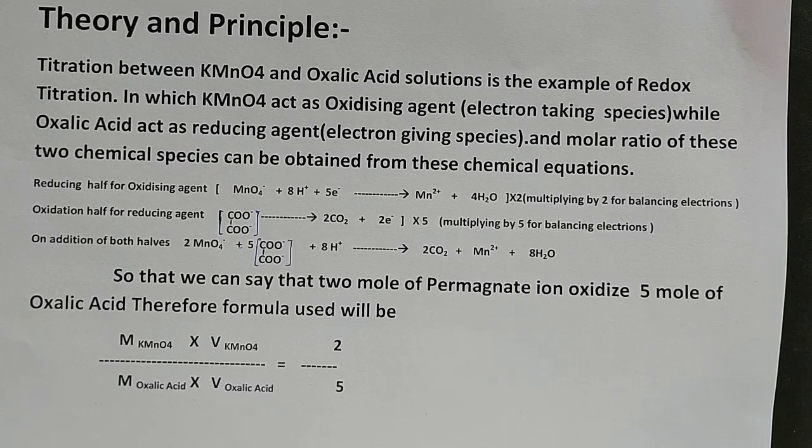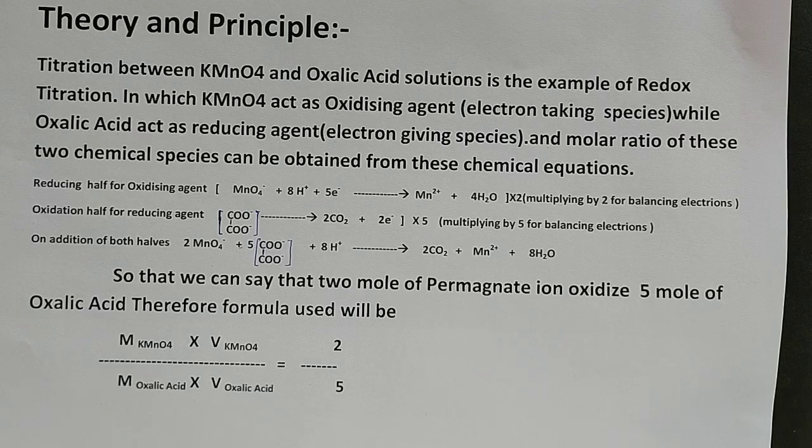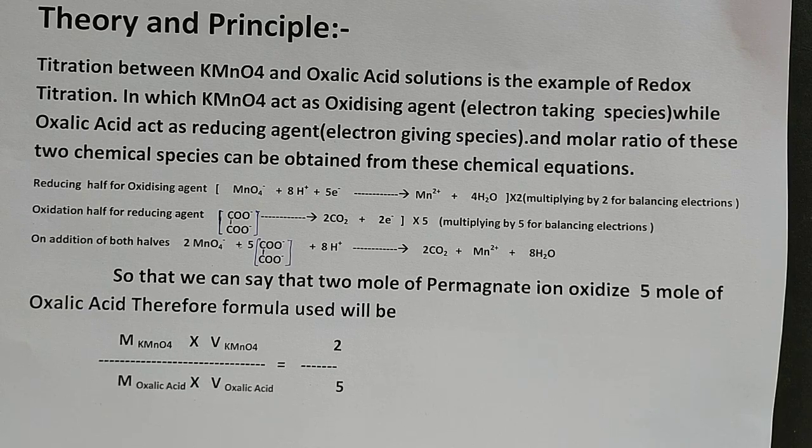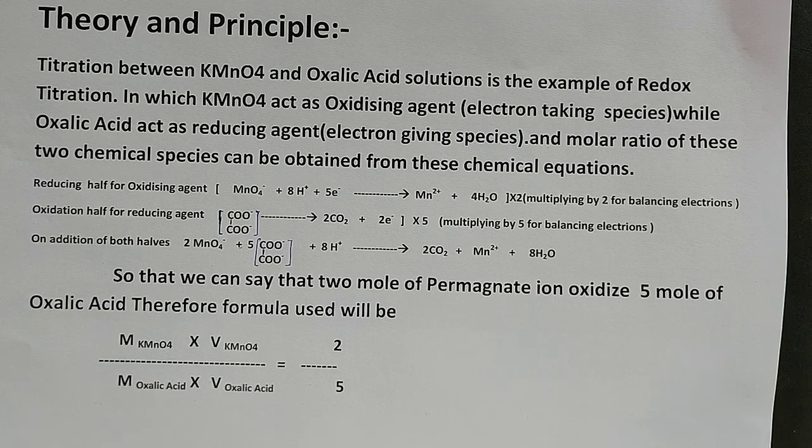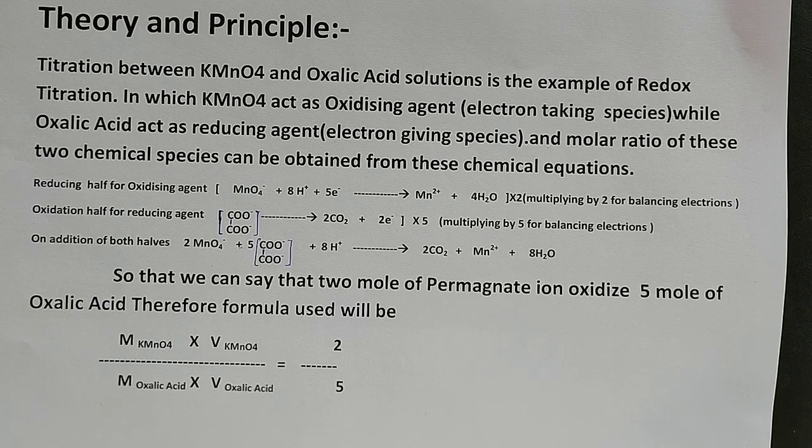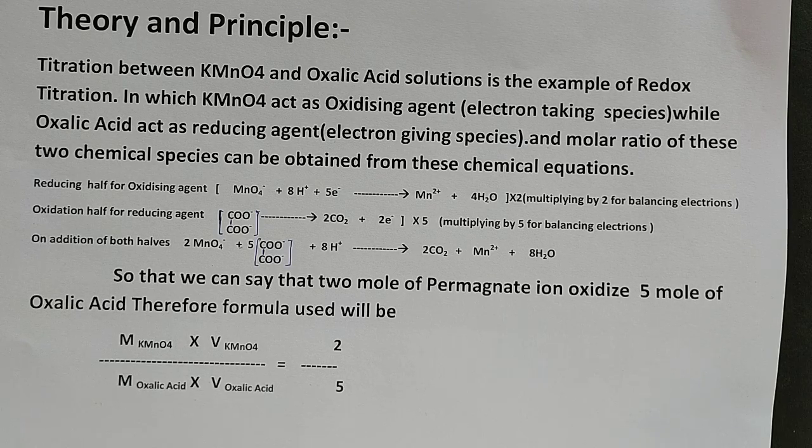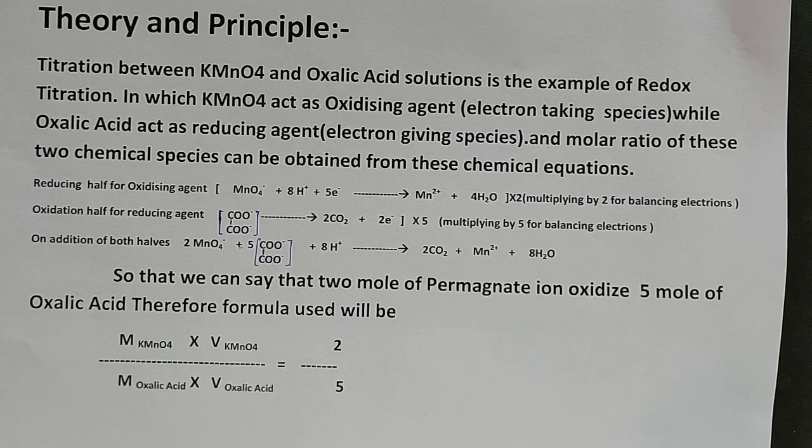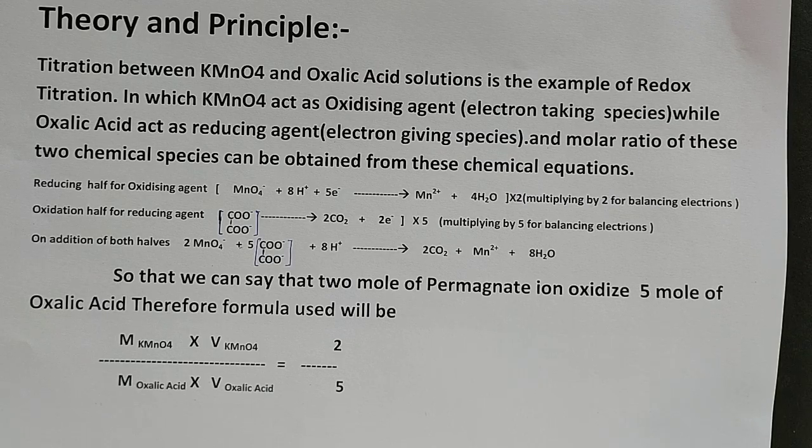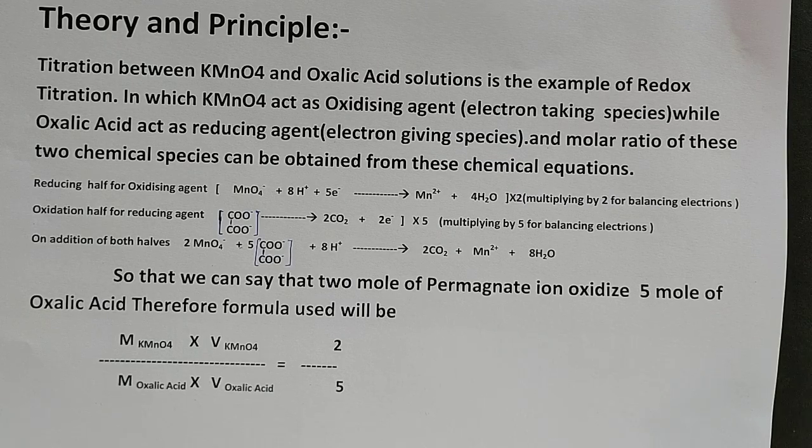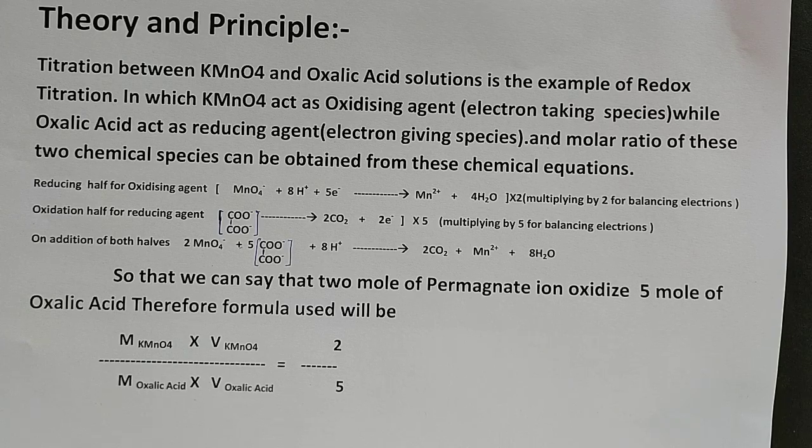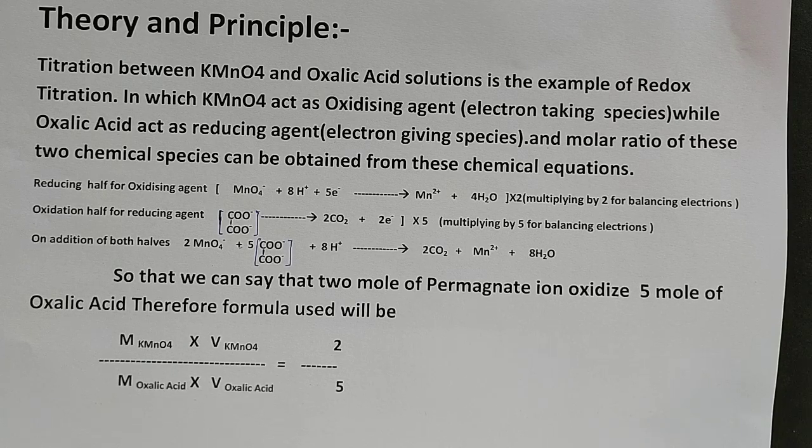Theory and principle: Titration between potassium permanganate and oxalic acid is an example of redox titration in which KMnO4 acts as an oxidizing agent (electron taking species), while oxalic acid acts as a reducing agent (electron giving species).